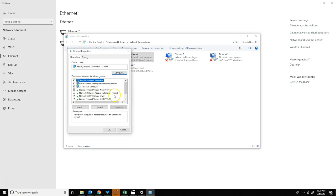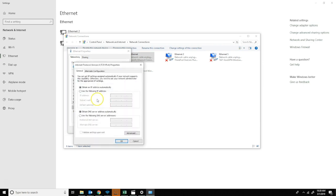Select Internet Protocol Version 4, then click on properties. This is where we enter our information.